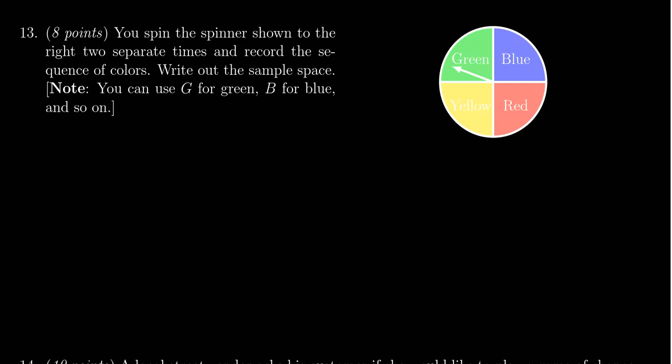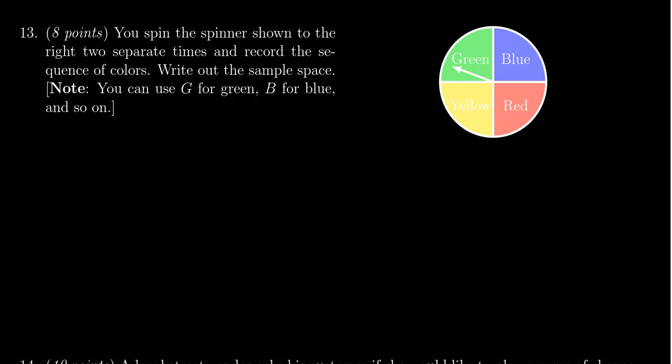In this video, we provide the solution to question number 13 for practice exam number four for Math 1030, in which case we have a random variable created by the following manner. You spin the spinner shown right here two separate times and record the sequence of colors. Write down the sample space.